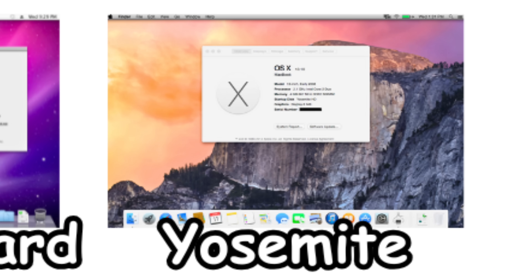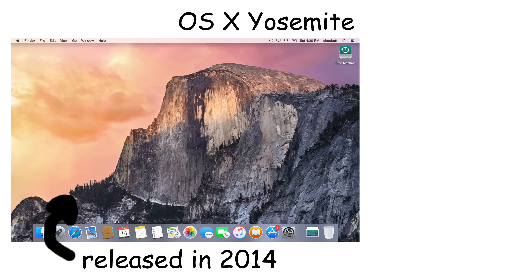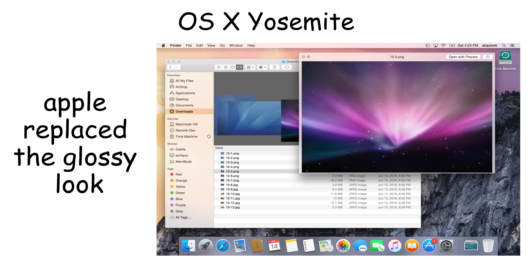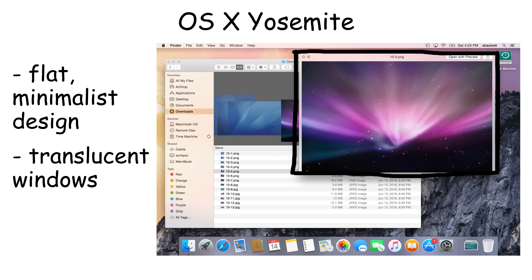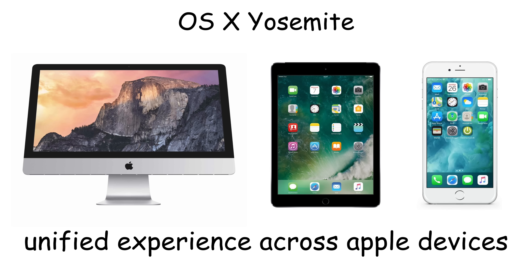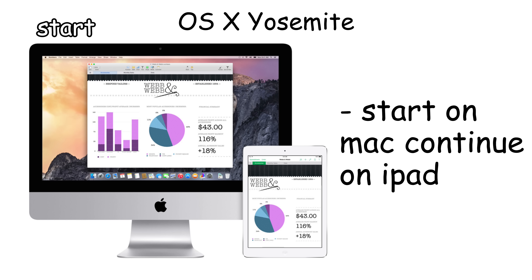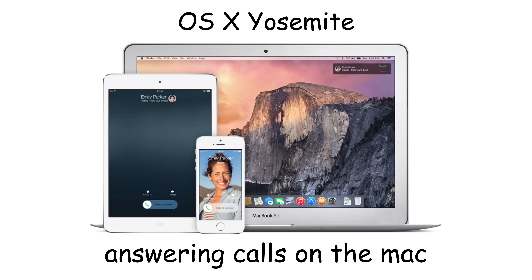OS X Yosemite was released in 2014 and introduced a completely redesigned interface inspired by iOS. Apple replaced the glossy look with a flat, minimalist design featuring translucent windows and vibrant colors. The goal was creating a unified experience across all Apple devices. Yosemite introduced Continuity, allowing users to start tasks on one device and continue on another, including answering phone calls and text messages from the Mac.